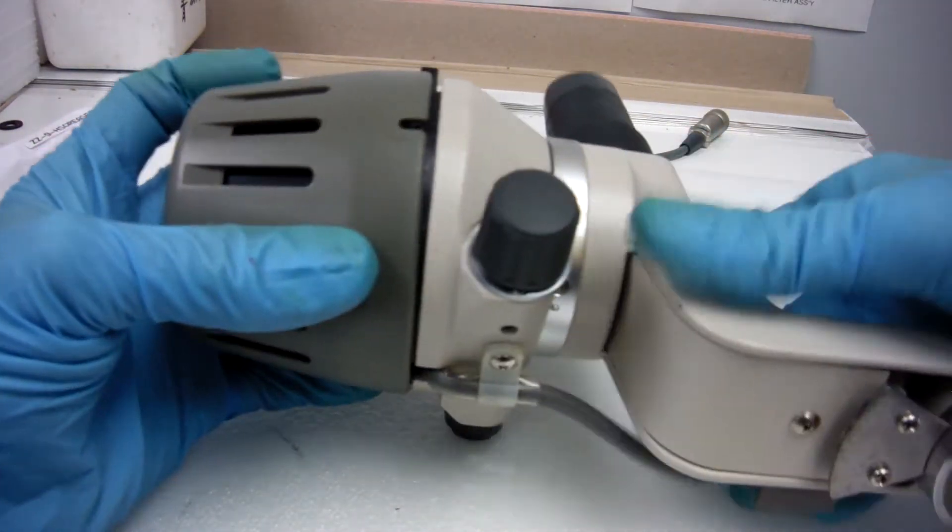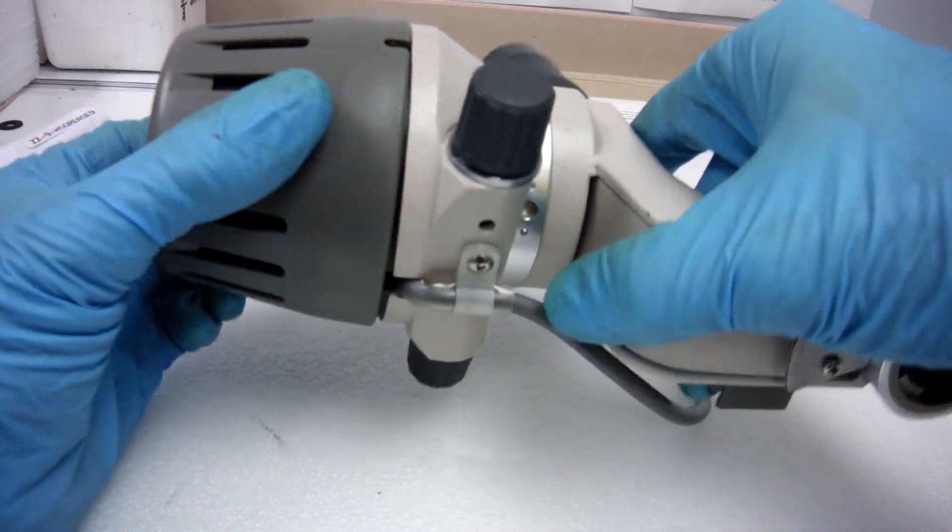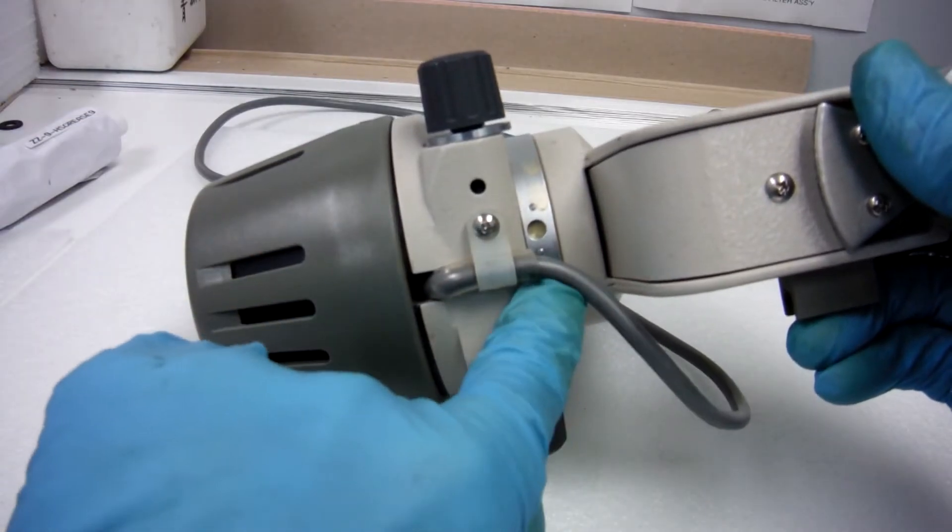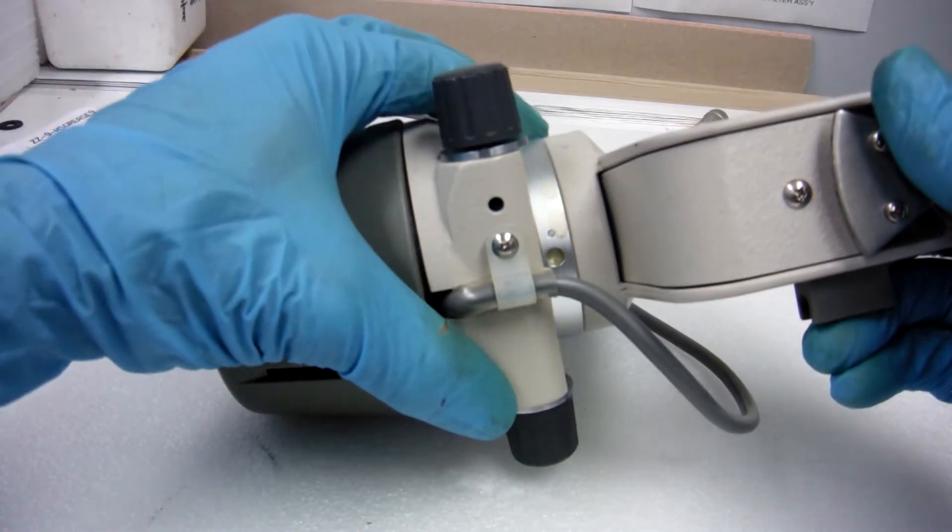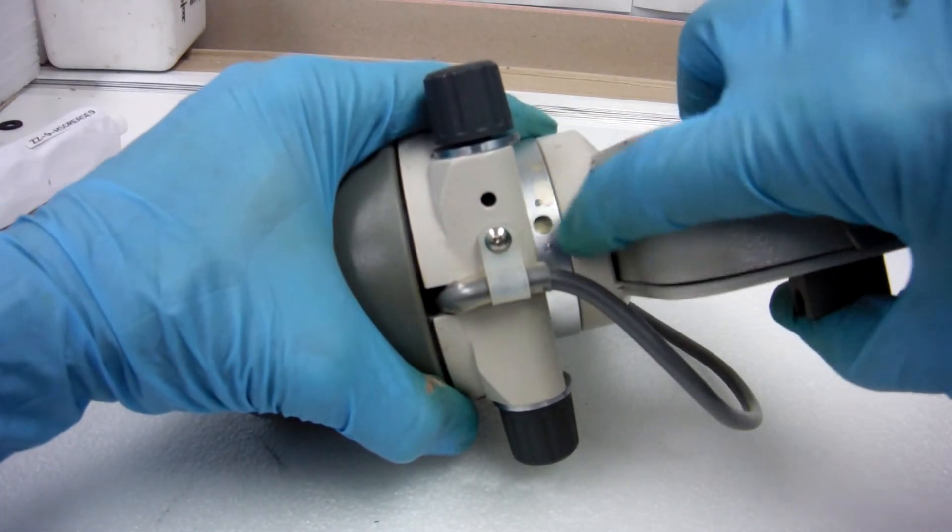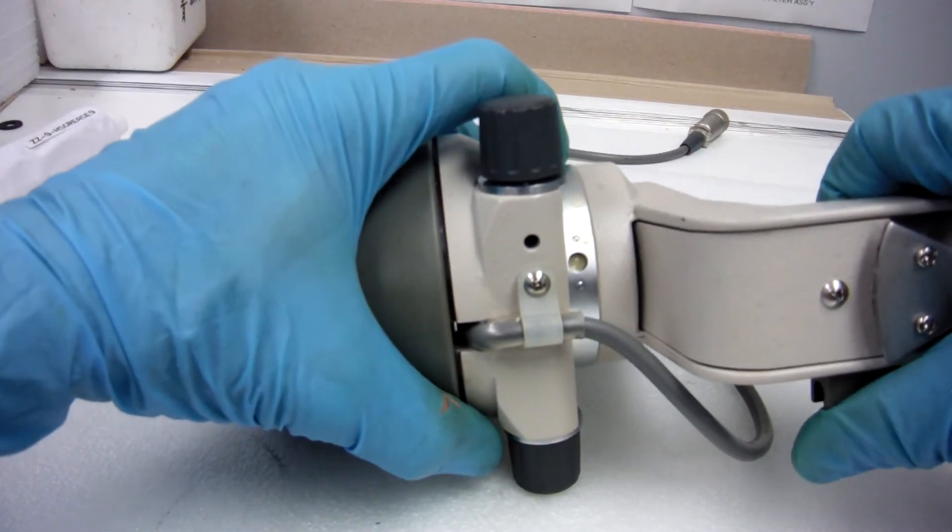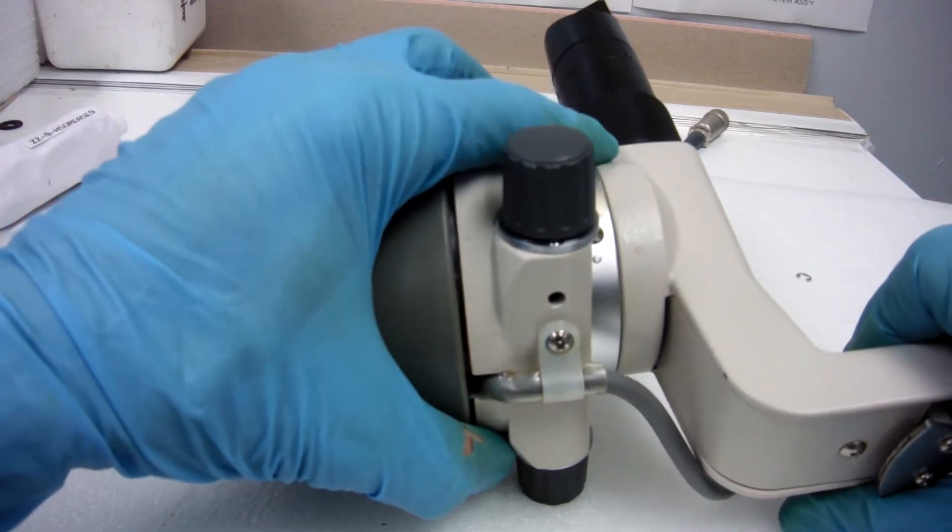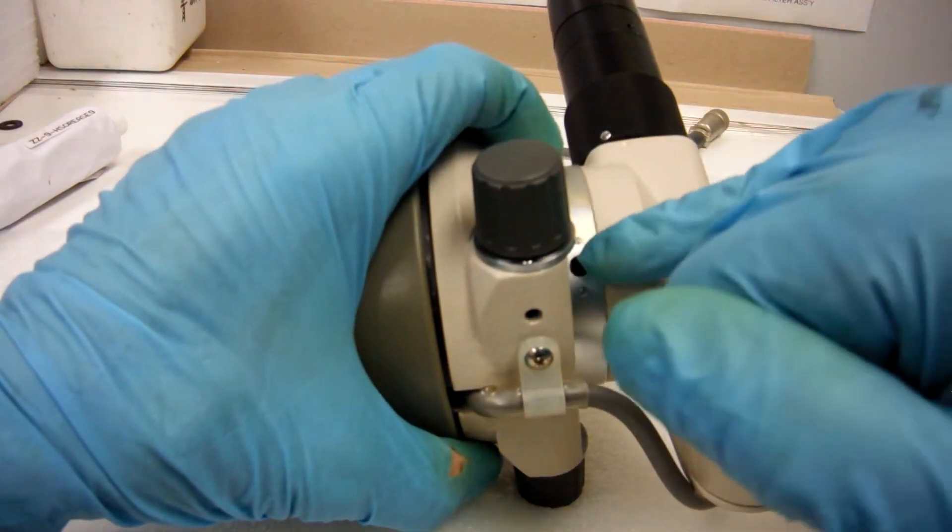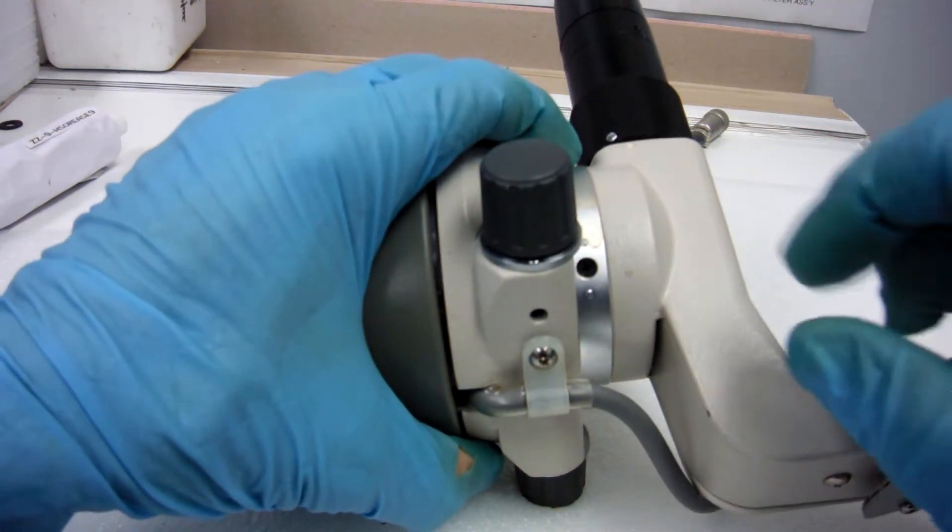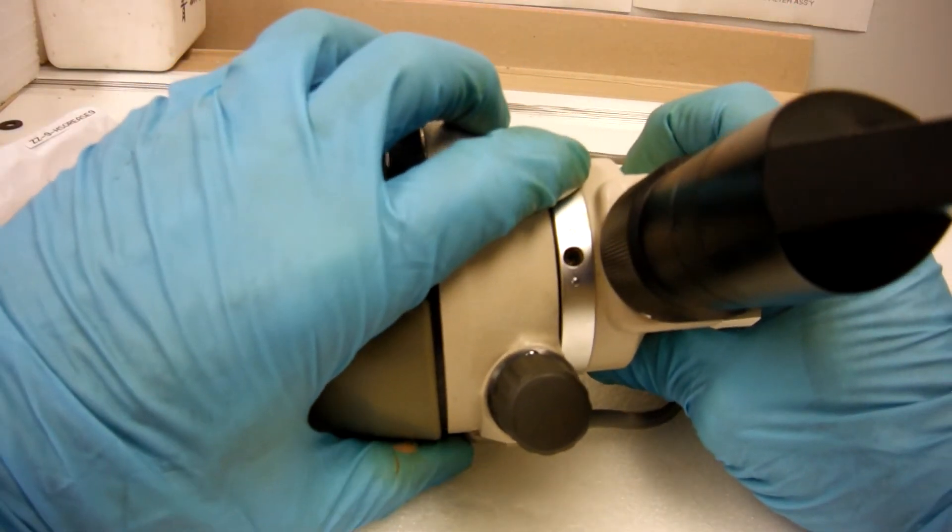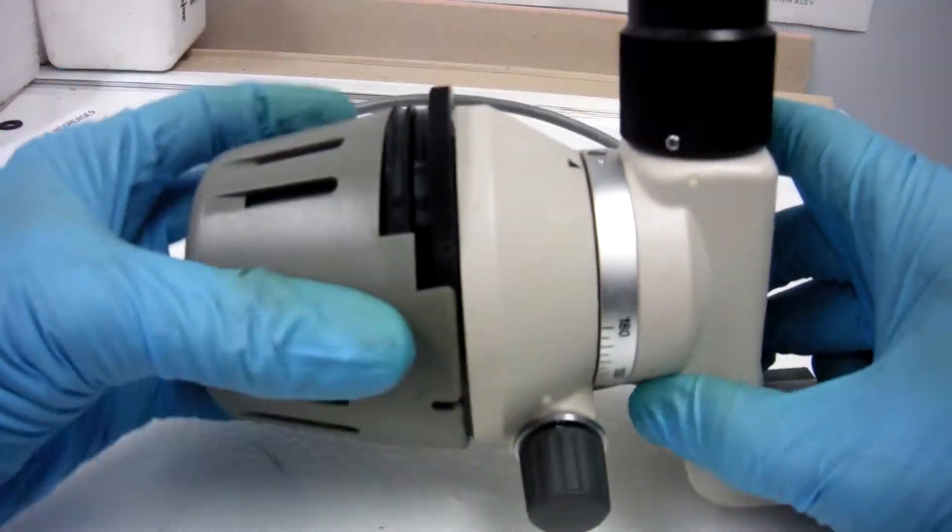We're just going to tighten the body up. Underneath here there are two set screws that hold this graduated ring. You would loosen those and then this graduated ring could turn and you could tighten. There's three Phillips, one on each side and one in the middle, that you would tighten. And that would tighten your body up.